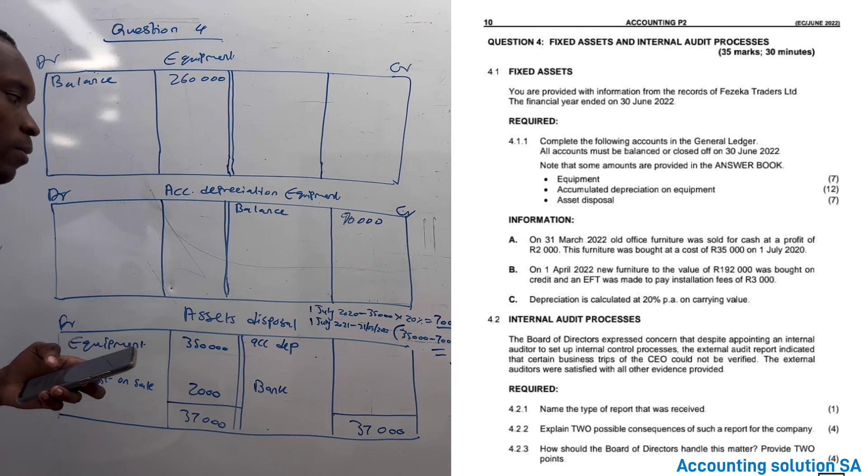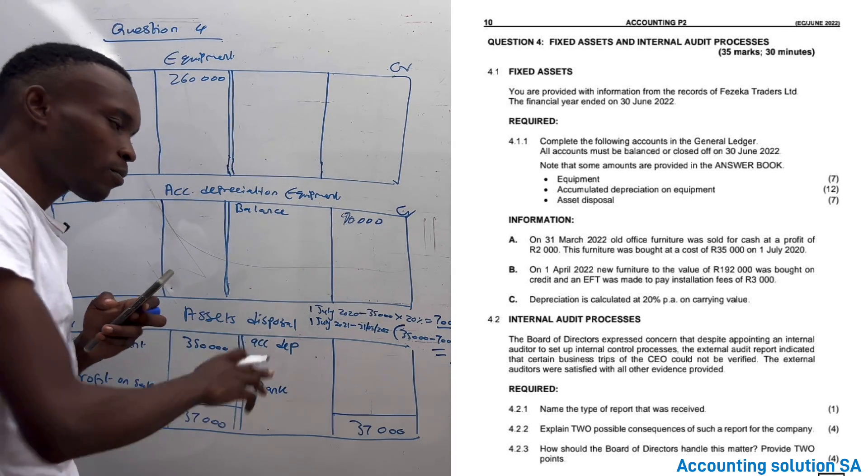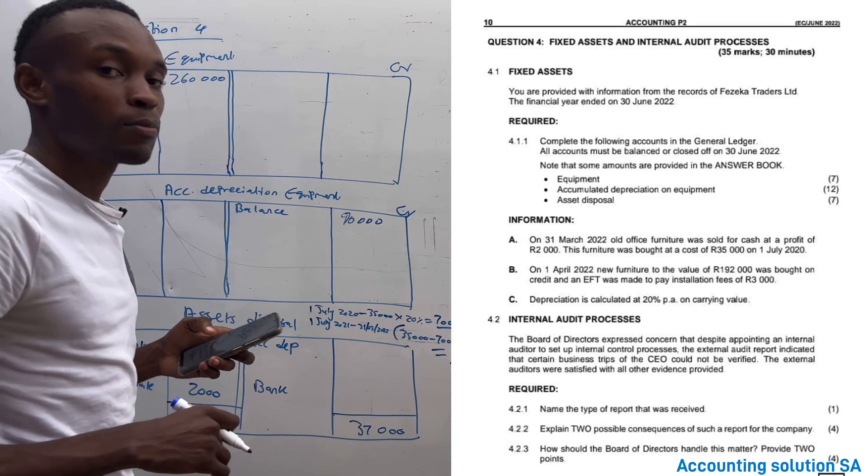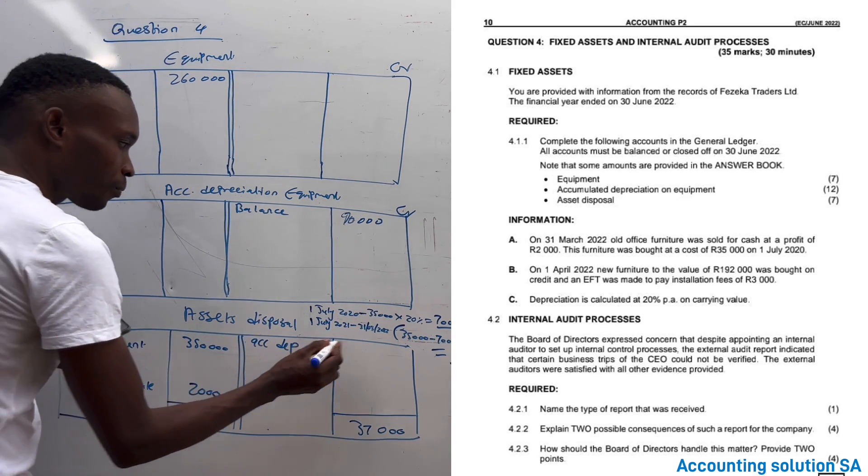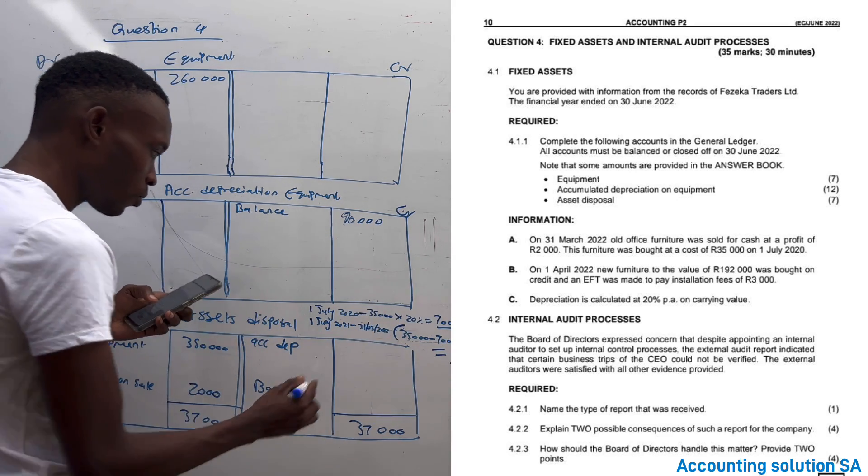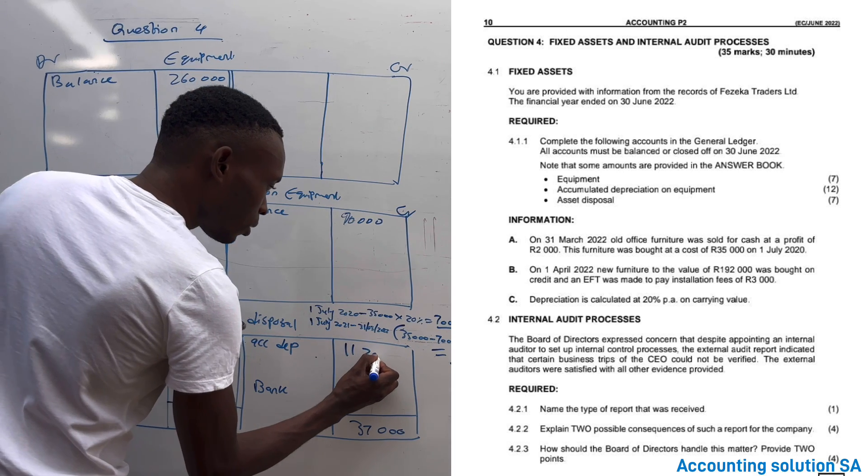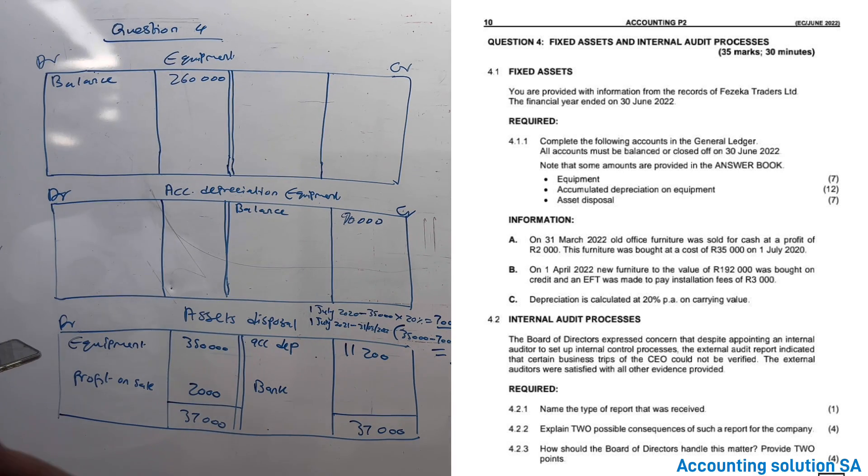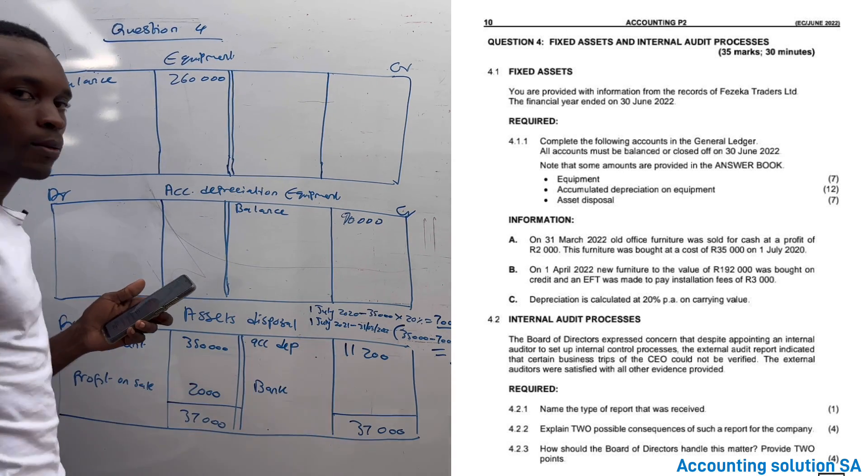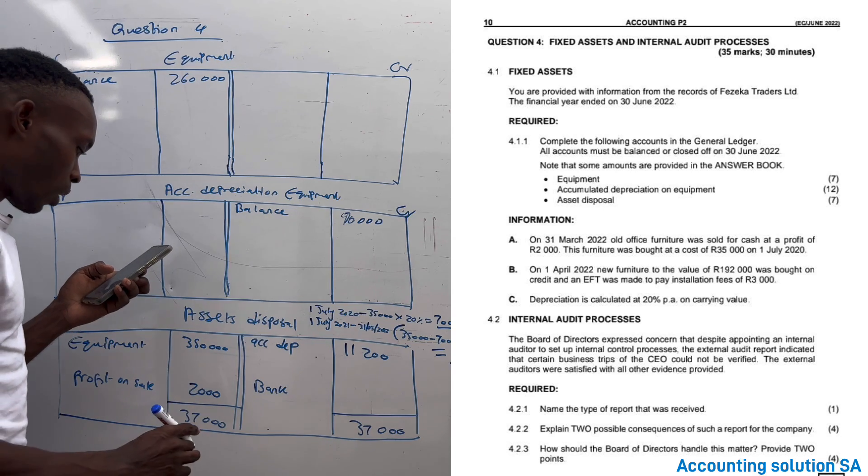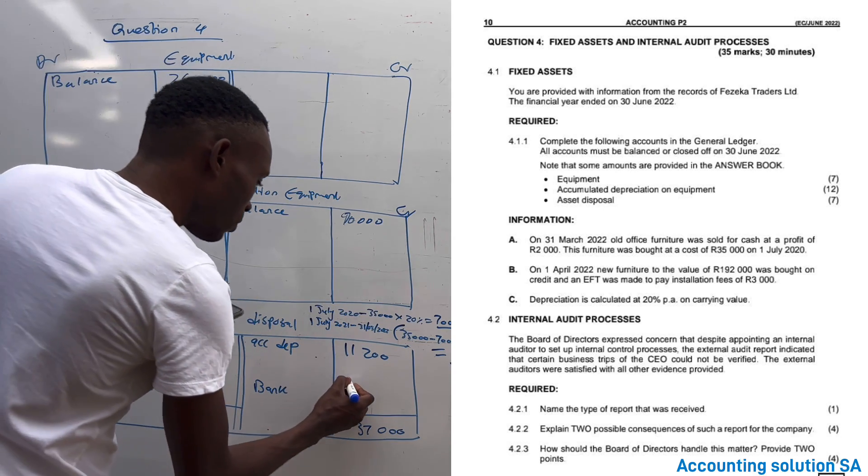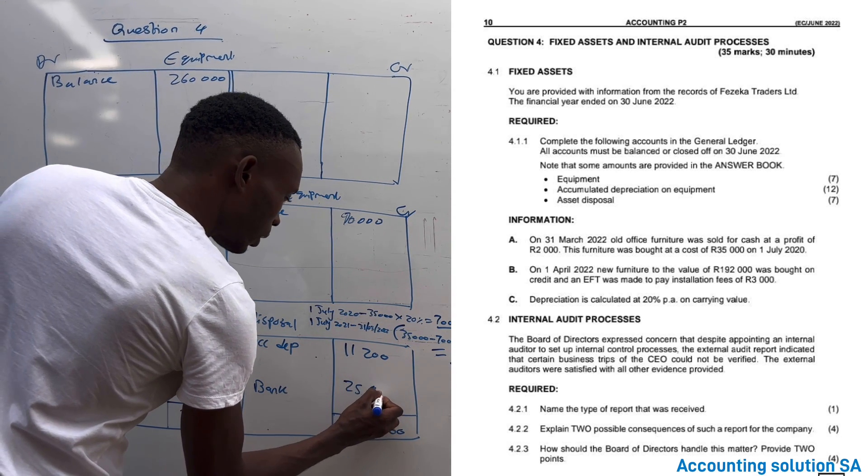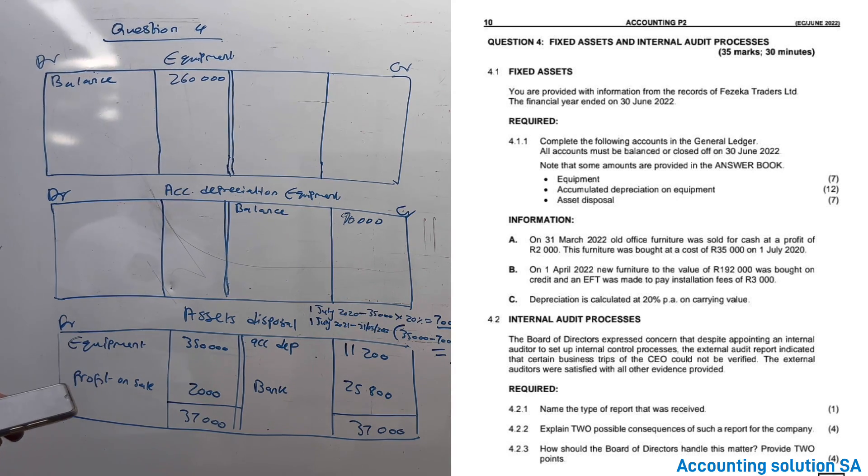Then you will get a depreciation of 4,200. So you have to add these two depreciations from the day of purchase until it has been sold. If you add them, these two, they're going to give you 11,200. And when you say this one minus this one, it's going to give you amount of 28,000 - 25,800. It's a balancing figure, this one.